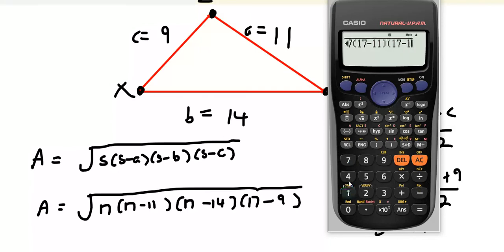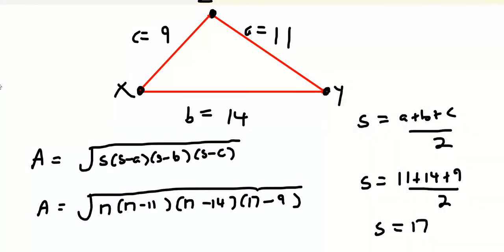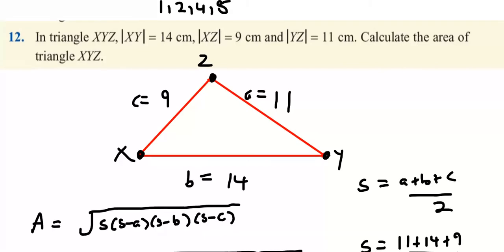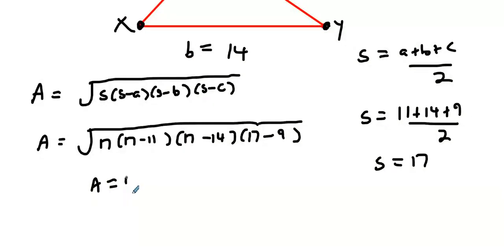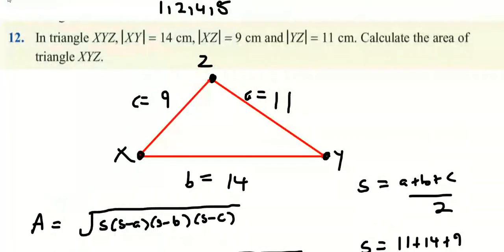And then what you should get is you press your square root sign, you go 17 times 17 take away 11, which we all know is 6, 17 take away 14, and then next bracket is 17 take away 9. Pull it in and you get 12 root 17, otherwise known as 49.48.